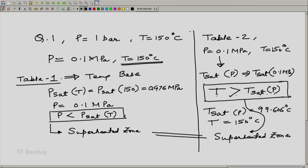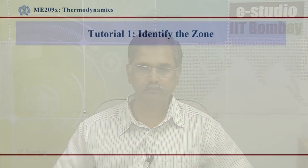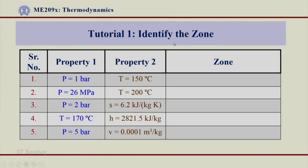Both conditions confirm that whether we use Table 1 or Table 2, we are lying in the superheated zone only. Coming back to the original problem: for p = 1 bar and T = 150°C, my answer is therefore that we are in the superheated vapor or superheated steam zone.